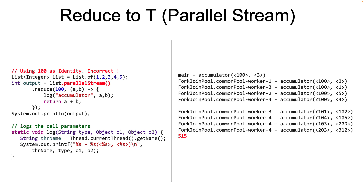Without the initial value being a true identity value, the output will be vastly incorrect when run in a parallel stream. The identity value is defined as: when the accumulator function is applied to the identity value and any element in the stream, you should get that element back again.